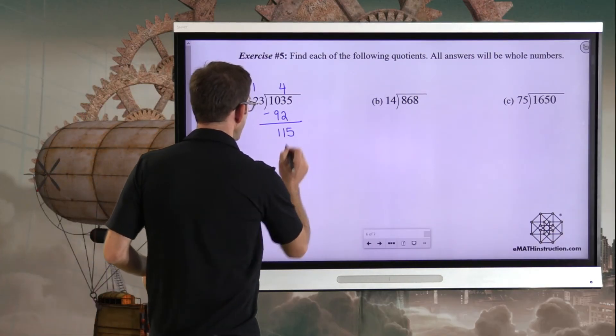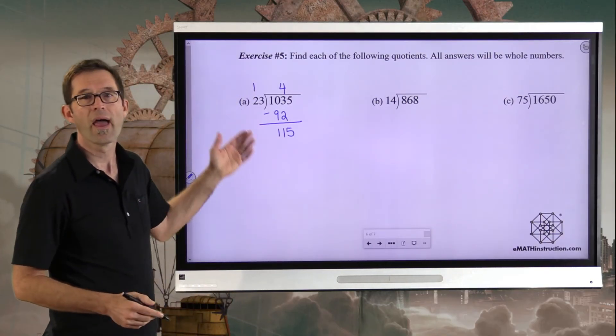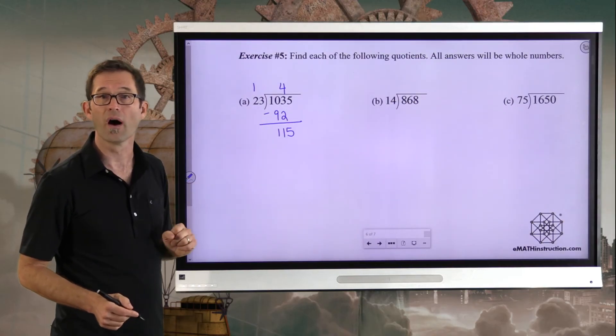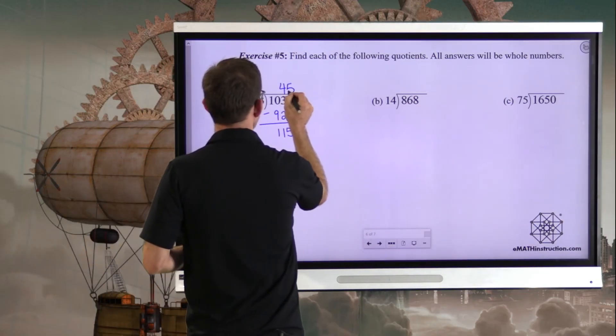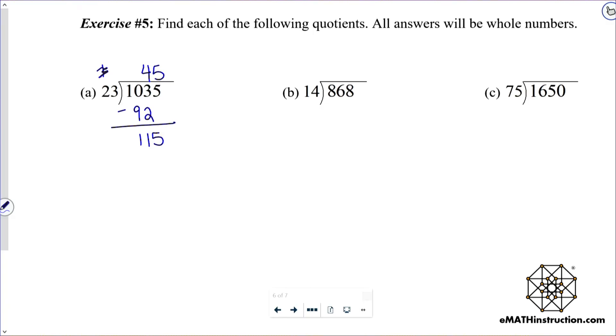Before I even drop that five down, I'm comfortable with the 11. And here's why. That remainder of 11 is smaller than 23. If that number had been bigger than 23, then I should have a bigger number up here. But it's smaller than 23, so I'm golden. I'm now going to drop that five down. And now I have to figure out how many times does 23 go into 115. That is, in fact, five times. Five times three is 15, carry the one. Five times two is 10, plus one is 11. I subtract and I get zero.